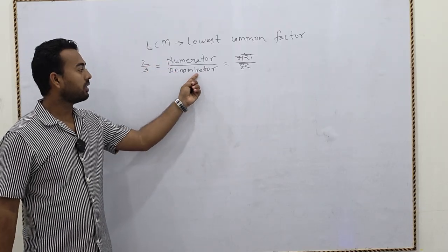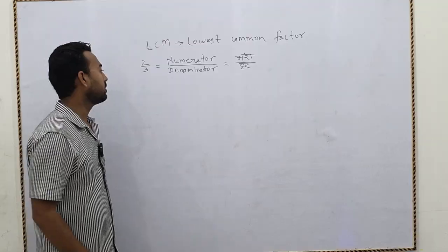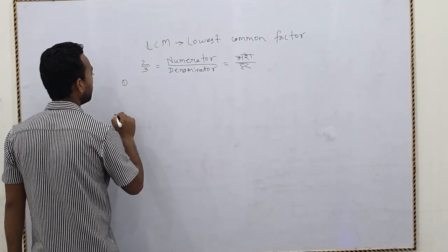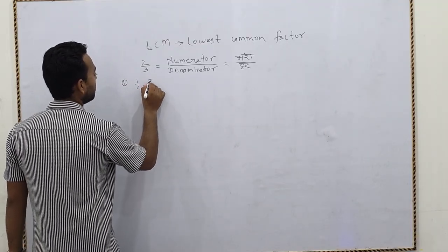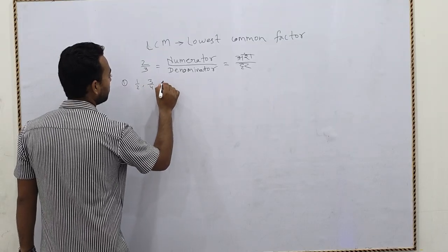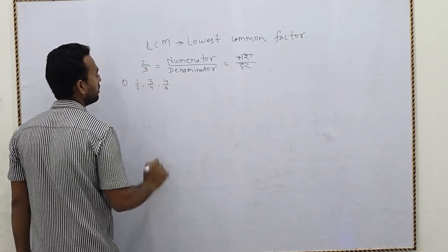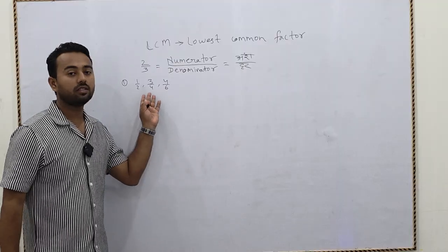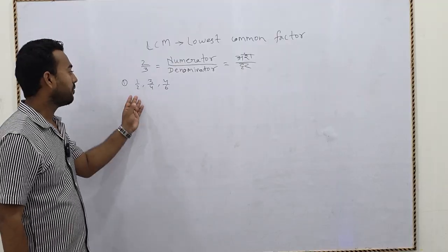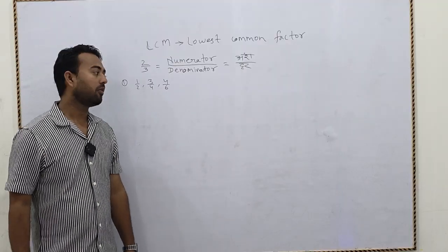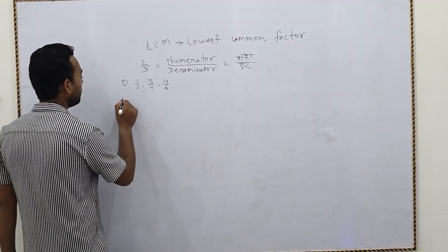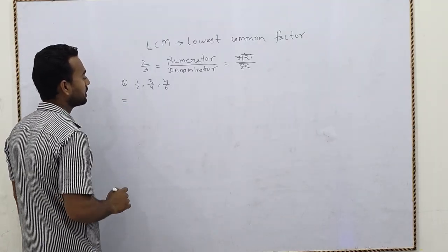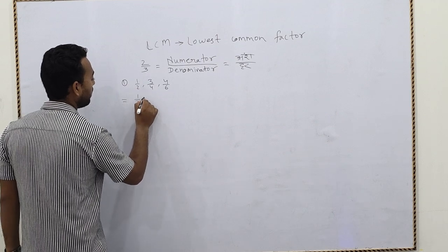Now you are aware that the upper one is the numerator and the downward is the denominator. Suppose a question is given: 1/2, 3/4, and 4/6. If the question is asking to find the sum, then how will we find it? For this type of question, we will add them.